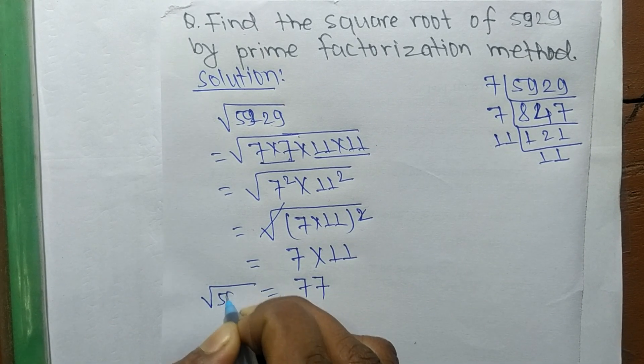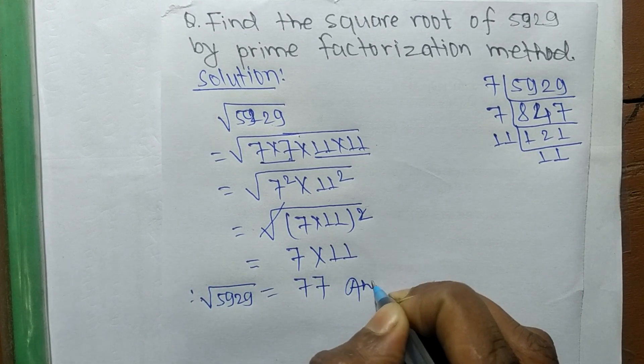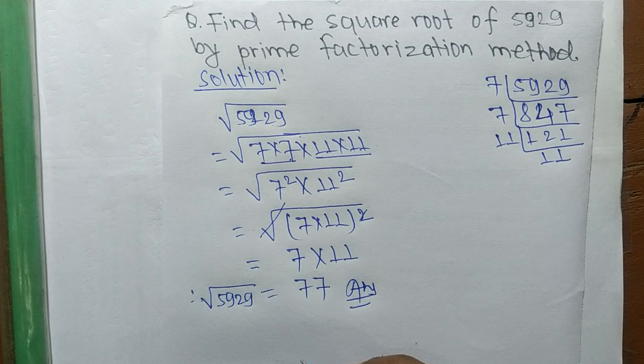So the square root of 5929 is equal to 77. So this much for today.